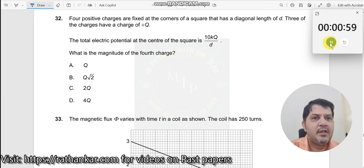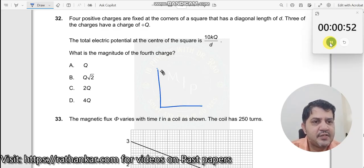Question number 32: 4 positive charges are fixed at the corners of a square that has a diagonal of length d.